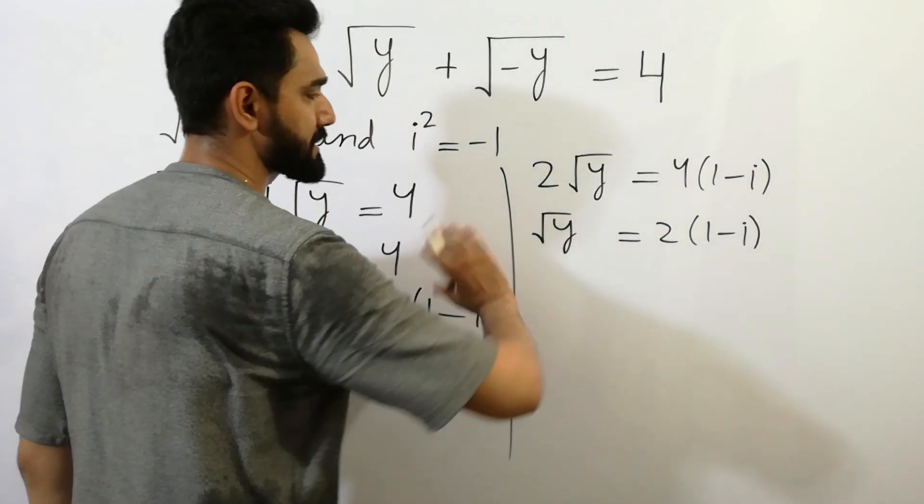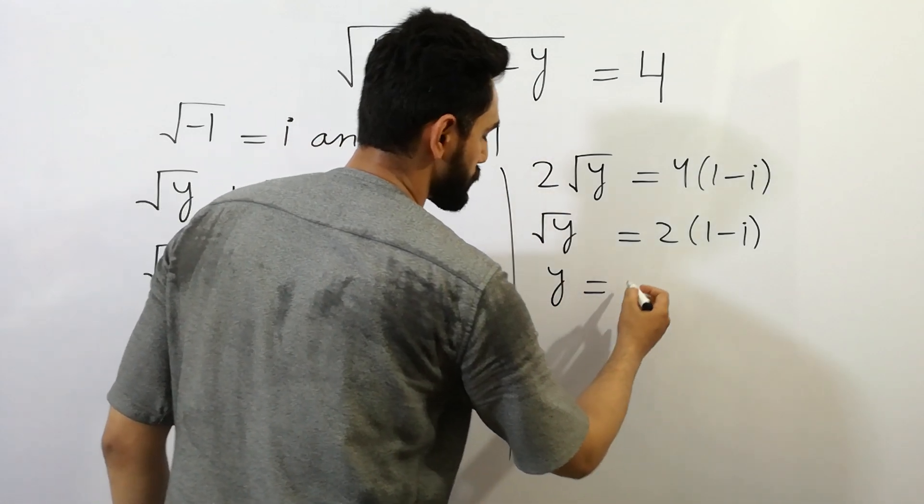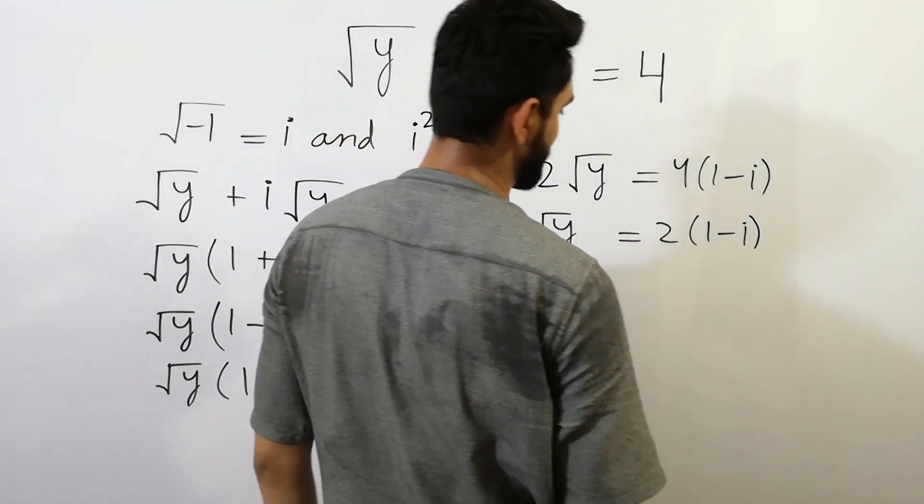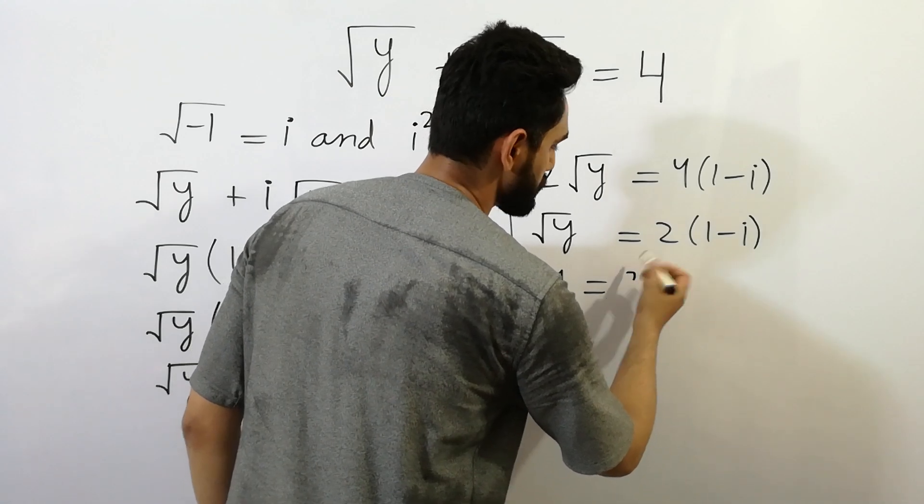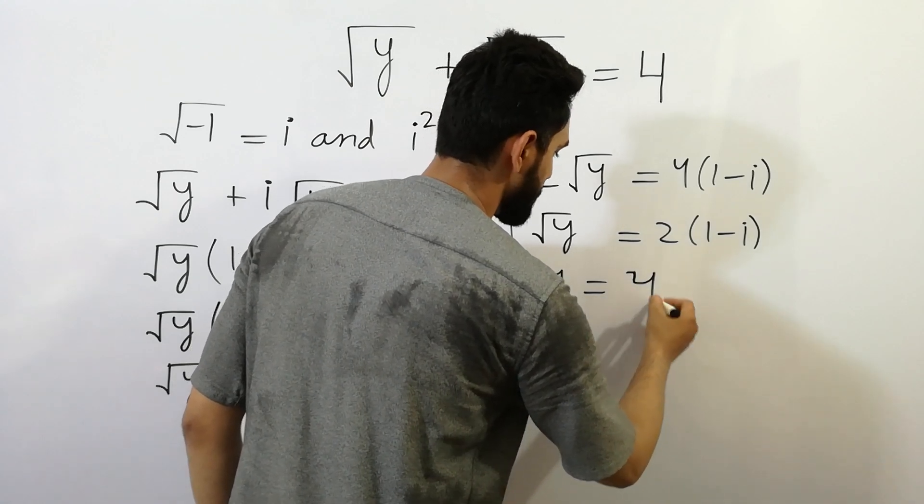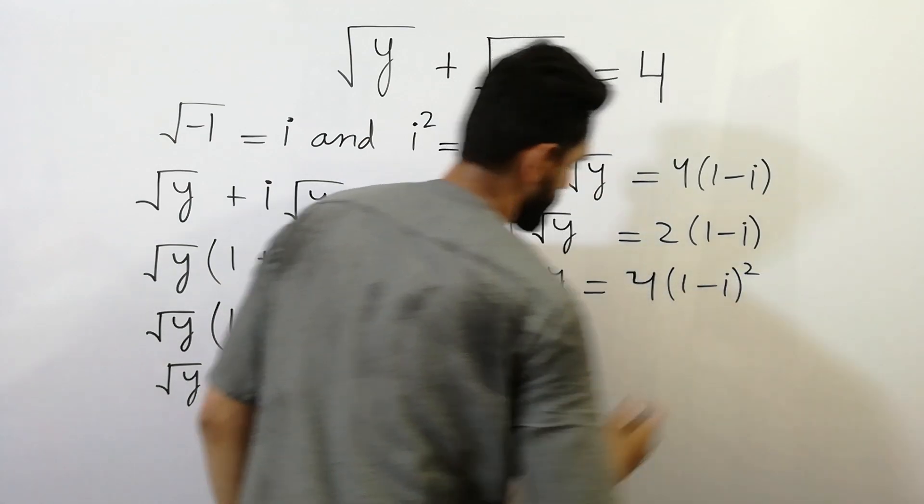Now by squaring on both sides, we get y is equal to, we get the value of 2 squared, we get 4 and 1 minus i whole squared.